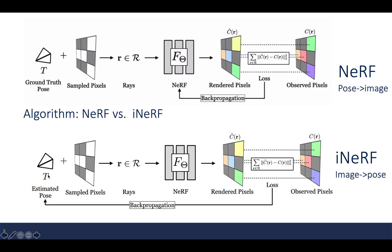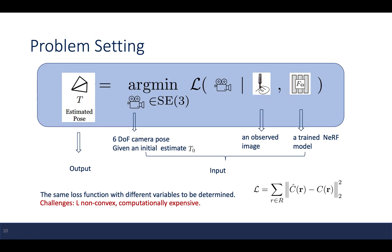With only an initial estimation of the pose and ground truth images, pixels are sampled and their positions are fed into the already trained NeRF model. The rendered images are then compared with the observed images, and the loss is back-propagated to update the pose estimation instead of the NeRF model weights. The problem is to estimate the 6-degree-of-freedom camera pose given an observed image, a trained NeRF model, and an initial pose estimate. However, since the loss function is non-convex and computationally expensive, several methods have been proposed to handle this.